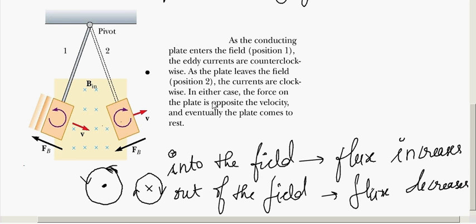We can conclude that the directions of eddy currents are opposite when the plate goes into the field versus when it comes out of the field. As the conducting plate enters the field, the eddy currents are counter-clockwise; as the plate leaves the field, the currents are clockwise. In either case the force on the plate is opposite to its velocity, and eventually the plate comes to rest. The motion is damped.